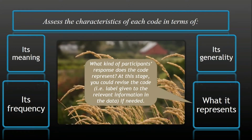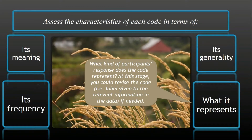Another thing you have to look at is what the code represents. You can go back and look at the significant information that are connected to the codes and find out the content of that significant information. You have to be flexible in this process to really make sure that the code you have developed best represents the significant information identified in the transcript. Sometimes you have to adjust the label a little bit to reflect the significant information under the code. Assessing this helps you better understand the code and decide if there's a need to make an adjustment.